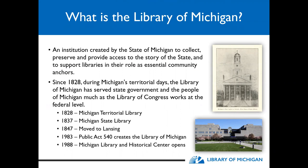On the top picture on the right you can see Michigan's first capital in Detroit, where the state library started with a collection of 131 items and one librarian. It has eventually moved to a size of over a million items. We serve state government and the people of Michigan much as how the Library of Congress works at the federal level — the Library of Congress is what we have tried to model a lot of our services after, only at the state level.